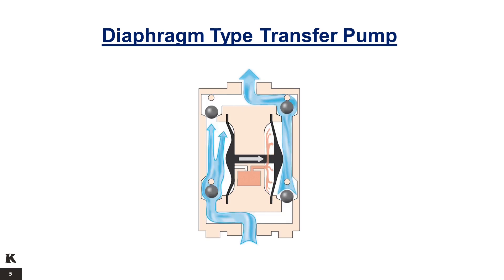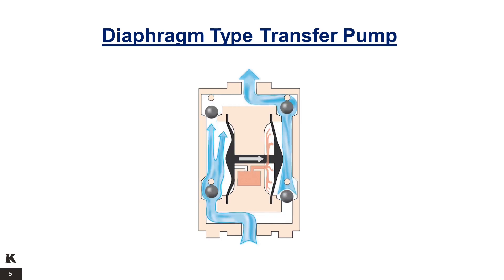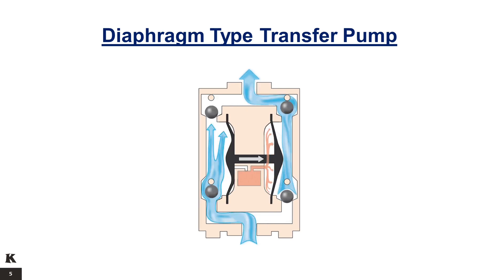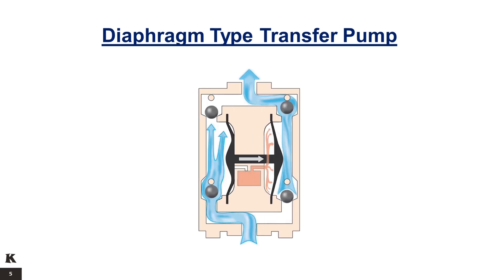It operates by forcing the air out of one chamber and into the next. This action is simultaneous and results in pumping the liquid out of one chamber and into the discharge piping, while the other chamber is filling with liquid. The main characteristics of a diaphragm pump are: low to moderate capacity, low to moderate pressure, very low efficiencies, no seal, and high pulsation.